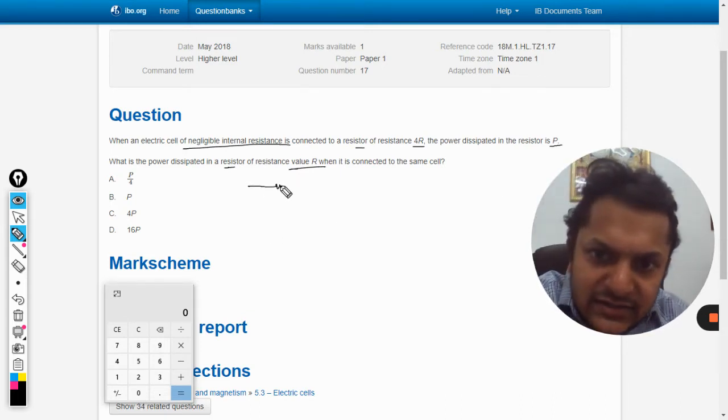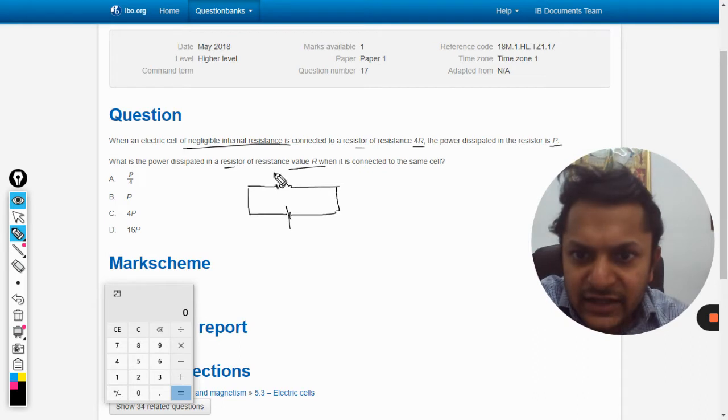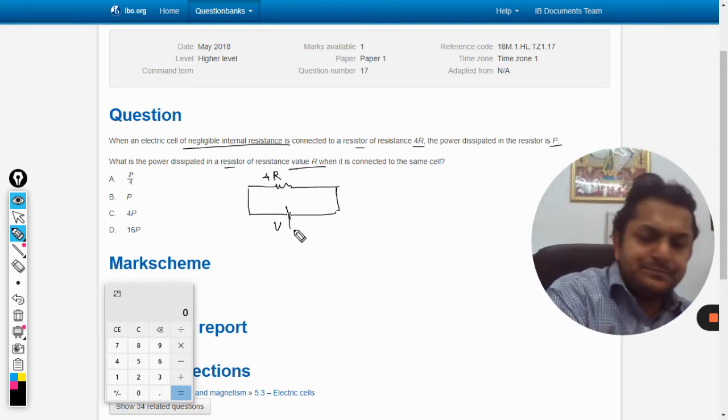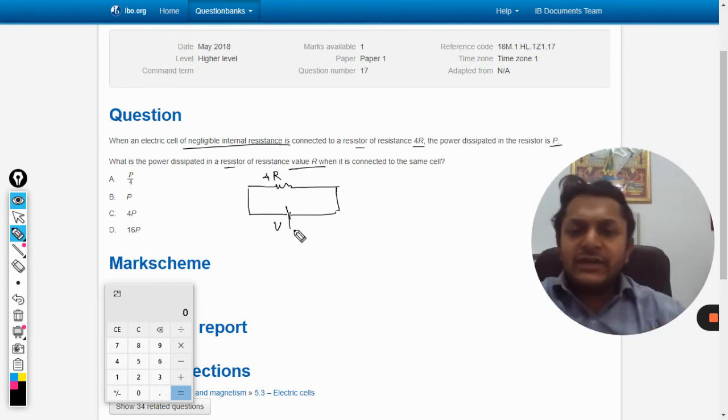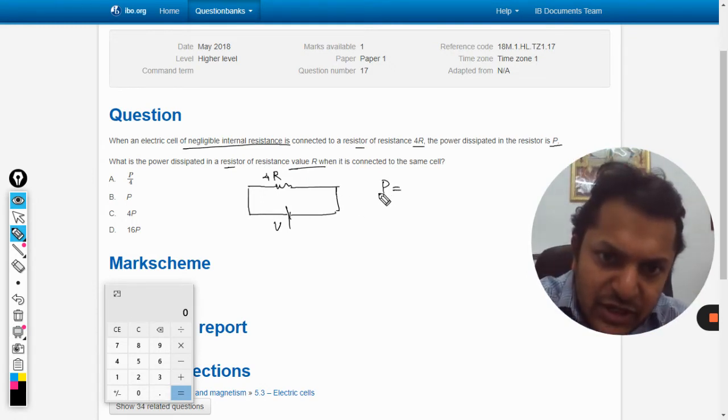So there is a resistor here connected across a battery. This resistor is given as 4R and the battery is V. He says that the power consumption here, so what are the formulas for the power consumption?